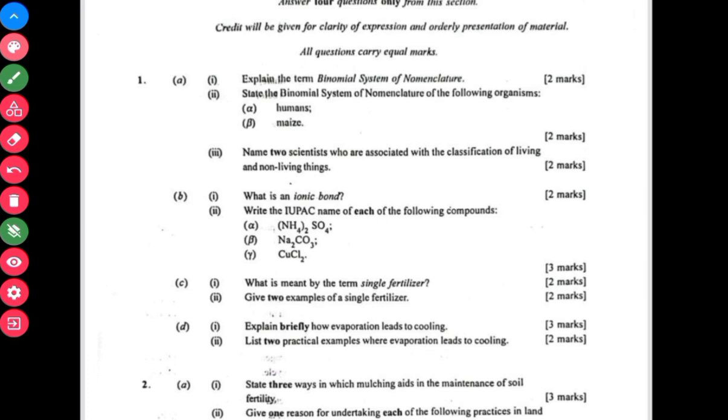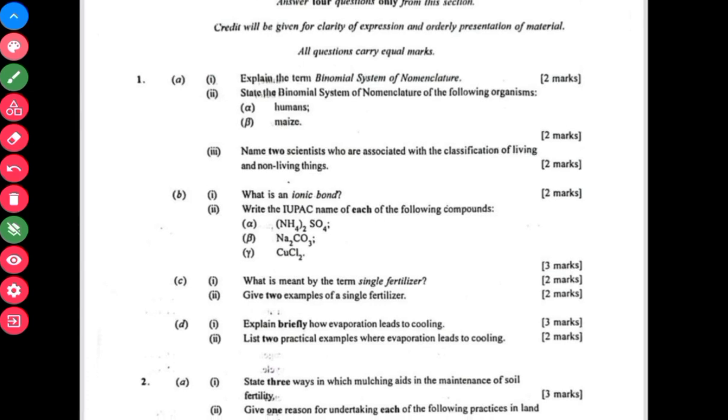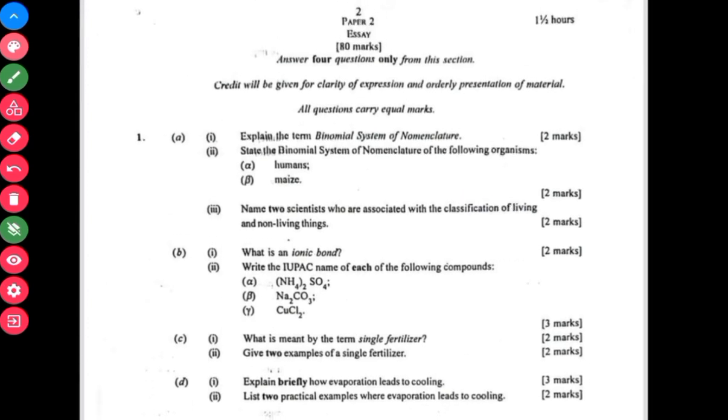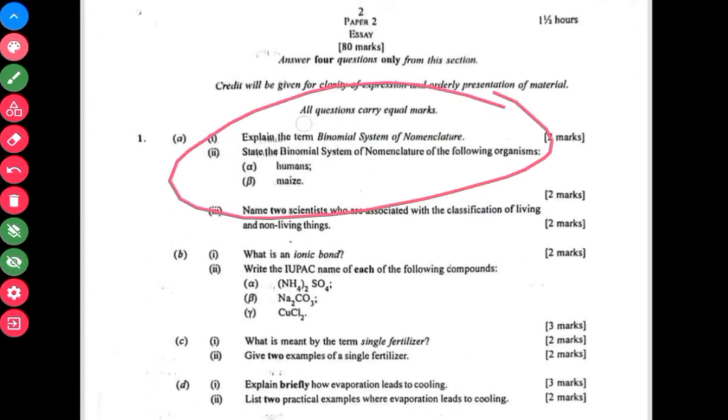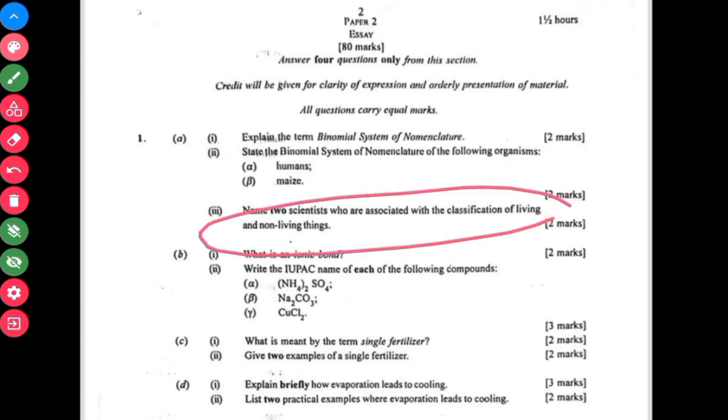So can you watch this video to the end, like it, and then subscribe to this channel. We'll begin right away with the first question on binomial nomenclature, which looks at classification in your textbook. Here you were asked to name two scientists.